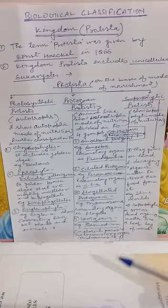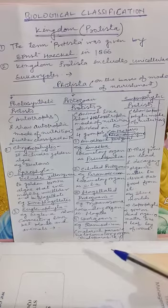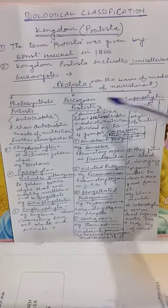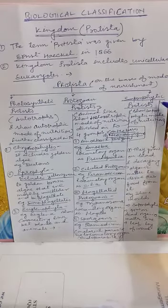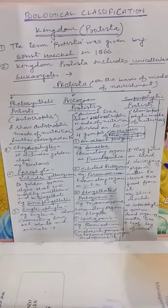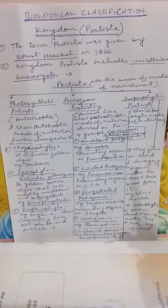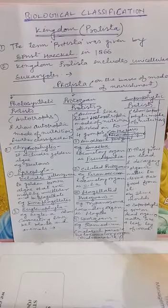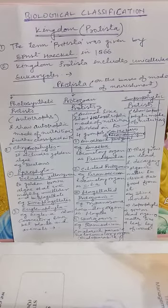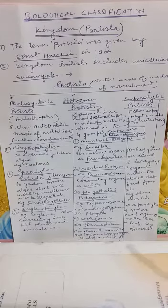The last group is sporozoans. The example is Plasmodium, which is the malarial parasite. Sporozoans have no locomotory organ because they are endoparasites. The final group of Protista is saprophytic protists, which grow on dead and decaying organic matter to derive their food. An example is slime molds, which grow on dead and decaying matter like leaves, logs of wood, etc.